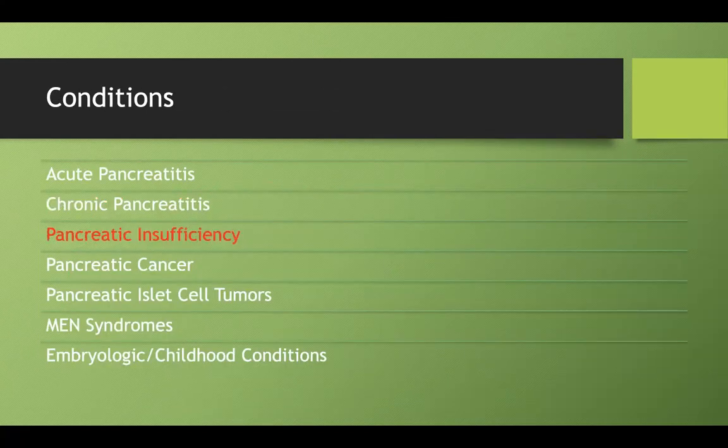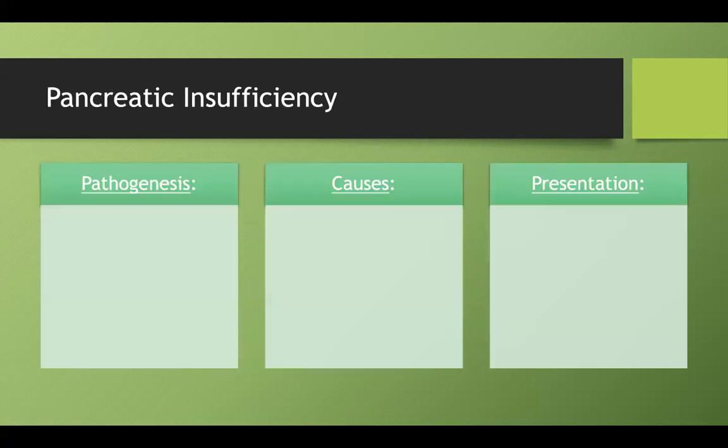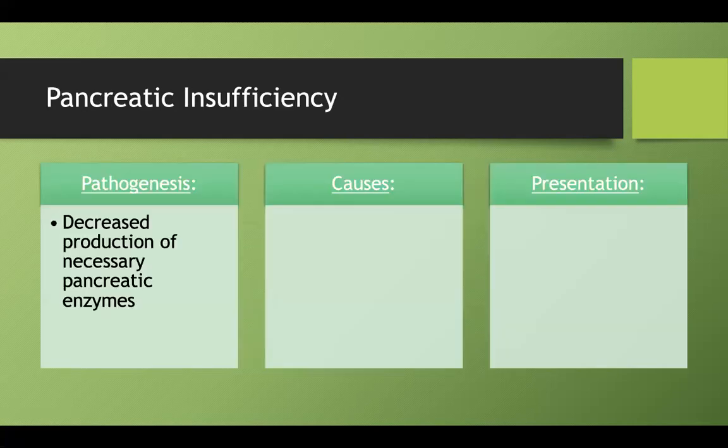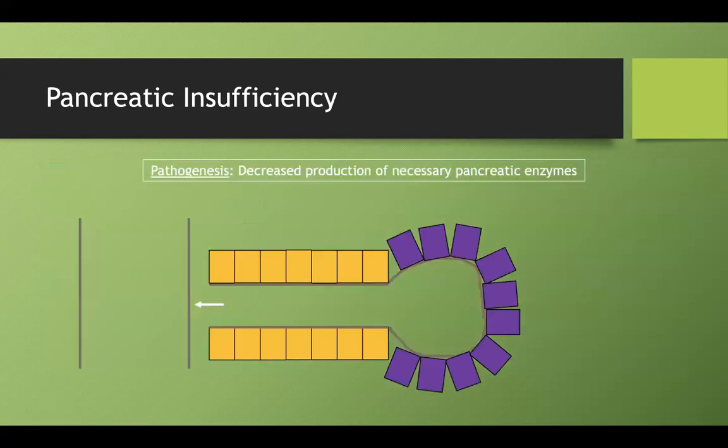Pancreatic insufficiency is caused by decreased production of the necessary pancreatic enzymes. Normally, acinar cells create zymogens that are secreted into the lumen, but with extensive pancreatic damage, these enzymes are no longer adequately produced.